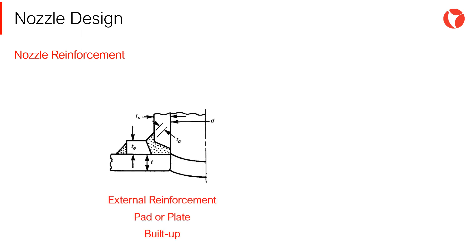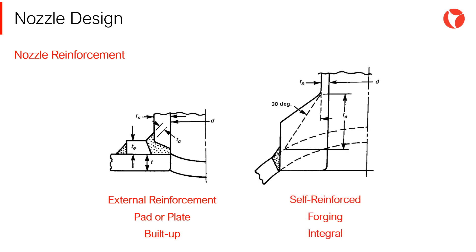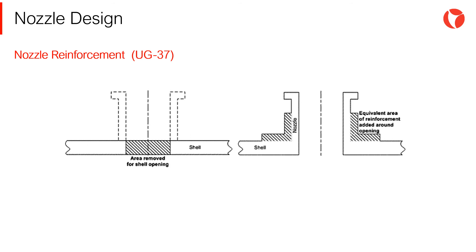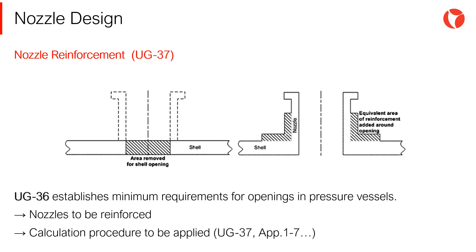The most common approach is to use pads or plates as an external reinforcement element. In some cases, mainly due to safety reasons, it is necessary to minimize the number of welded joints in a vessel; in these cases, self-reinforced nozzles made out of forged elements are used. The ASME code establishes the places where reinforcing material should be provided for the different nozzle configurations. Minimal requirements for openings are laid out in paragraph UG-36, which first defines which nozzles must be reinforced, then states which calculation procedure is to be followed.